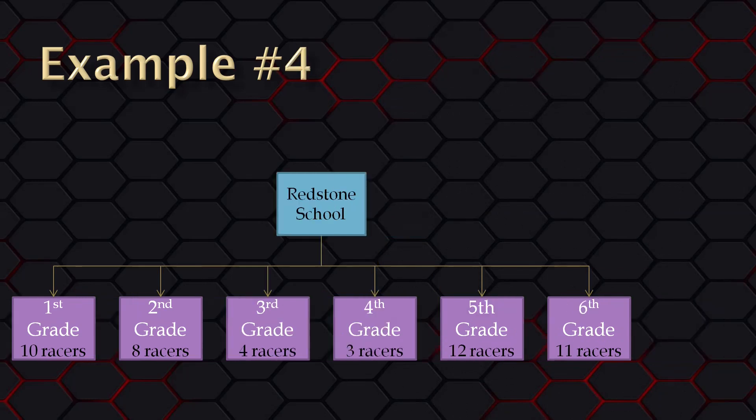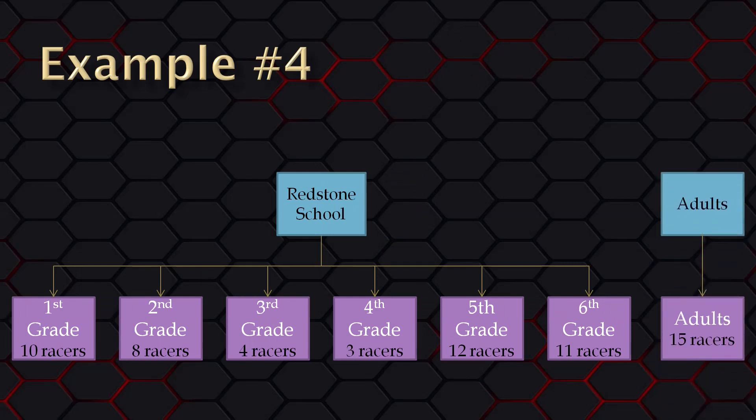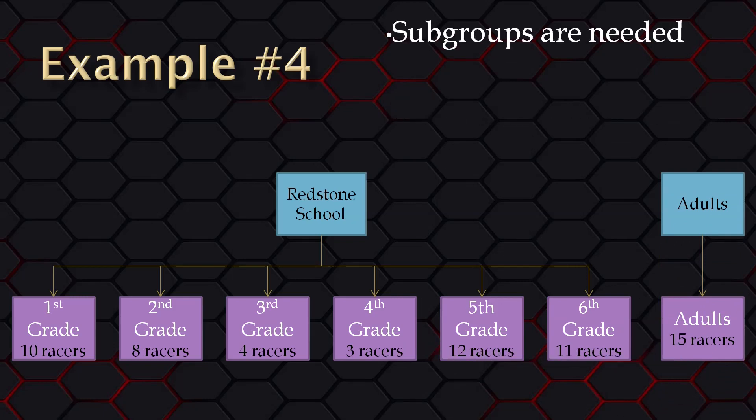In our last example, we have the same school group and subgroups. The difference is that we are adding in an adult group and its corresponding subgroup. With adults being in their own race group, they will not compete against the grade school children. In this example, subgroups are needed and time scoring must also be used.